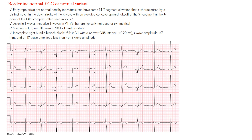Here we have our borderline normal ECG or normal variant. The purpose of these videos is not to explain every aspect of the ECG — this is a quick reference guide. The goal is to ensure you understand what these codes we use are, because this is how it works in the clinical setting: the computer reads it first, then we have our text, then the physicians over-read it. These are the codes used on board exams as well.